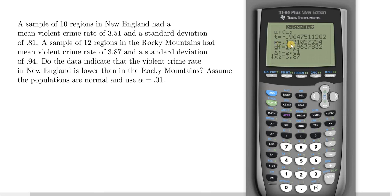In this case, our p-value is 0.17, and it is bigger than alpha, so we fail to reject the null hypothesis. There is not sufficient evidence to support the claim that the violent crime rate in New England is lower than in the Rocky Mountains. I hope this video has been helpful.